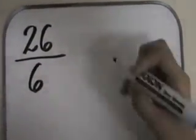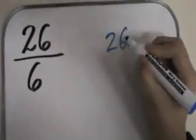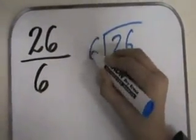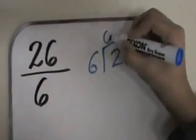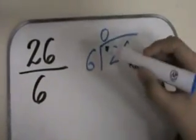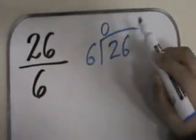Okay. So we take 26 and divide it by 6. Since 6 can't go into 2, we have to put a 0 on the top. Now, 6, now we take the whole number.